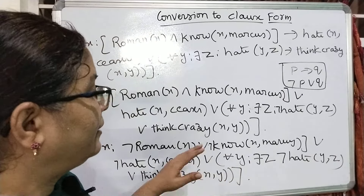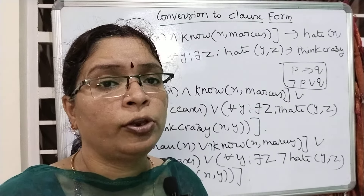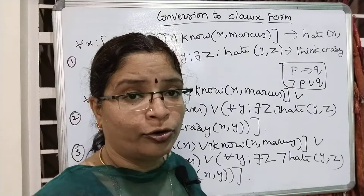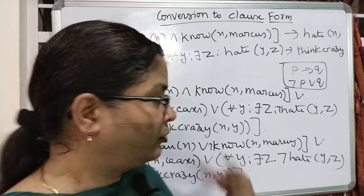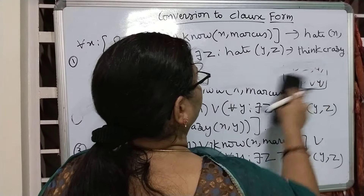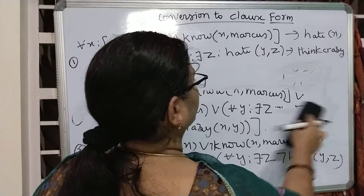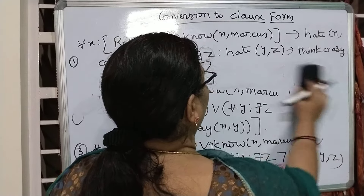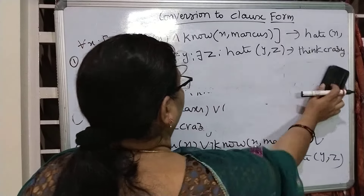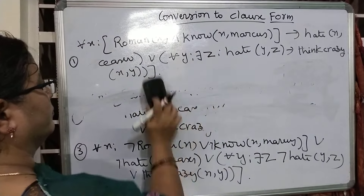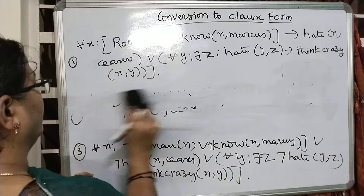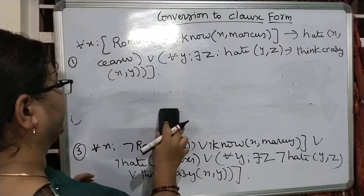In the conversion of the clause form, the next step is removal of quantifiers. How can we remove the quantifiers? There are for all x, for all y, and there exists z. How can we remove such quantifiers? Now we are going to see. Step number 4 is the removal of the quantifiers.